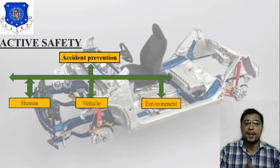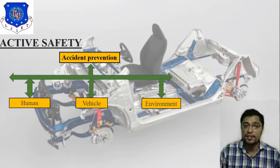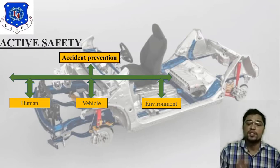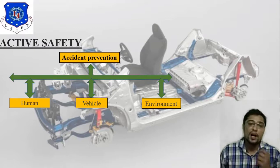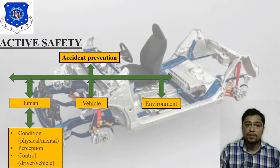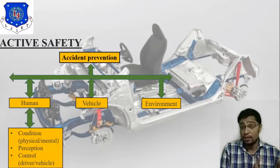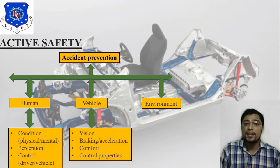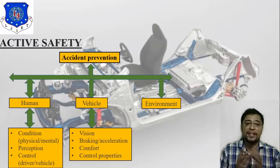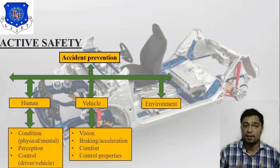Active safety — how it can be implemented — is based on accident prevention with three criteria: human criteria, vehicle criteria, and environmental criteria. Under human criteria: first is condition (physical or mental), second is perception, and third is control over the driver and vehicle. For vehicle criteria: vision is very important, then braking and acceleration, comfort, and control properties.